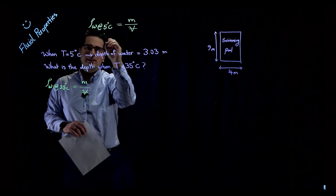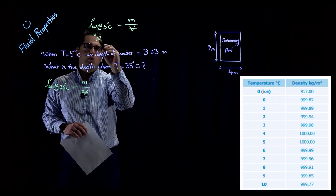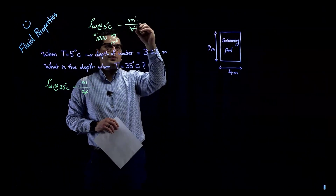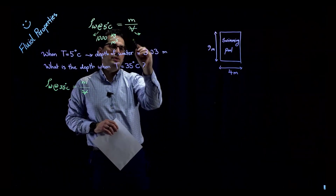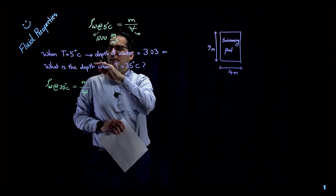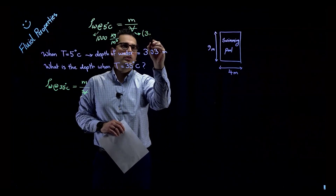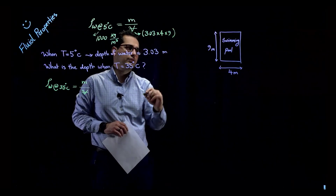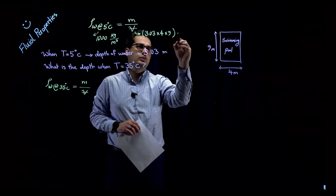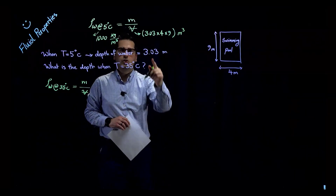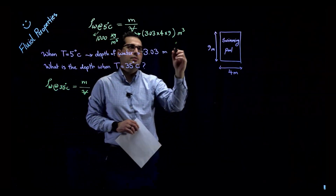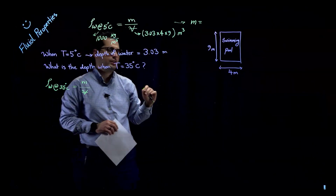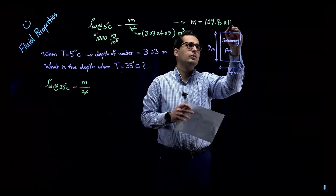The density of water at 5 degrees Celsius is 1000 kg/m³. Volume equals depth times length times width: 3.03 × 4 × 9 cubic meters. The only unknown is mass. I can find the mass by multiplying the volume by 1000, and the unit is kilograms. Since there is no evaporation and no leakage, mass remains constant.